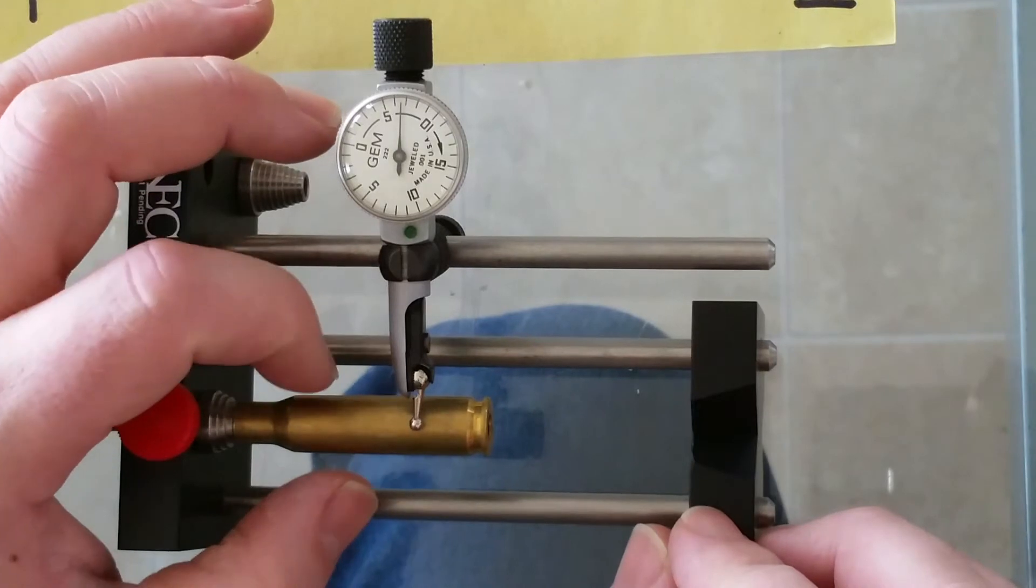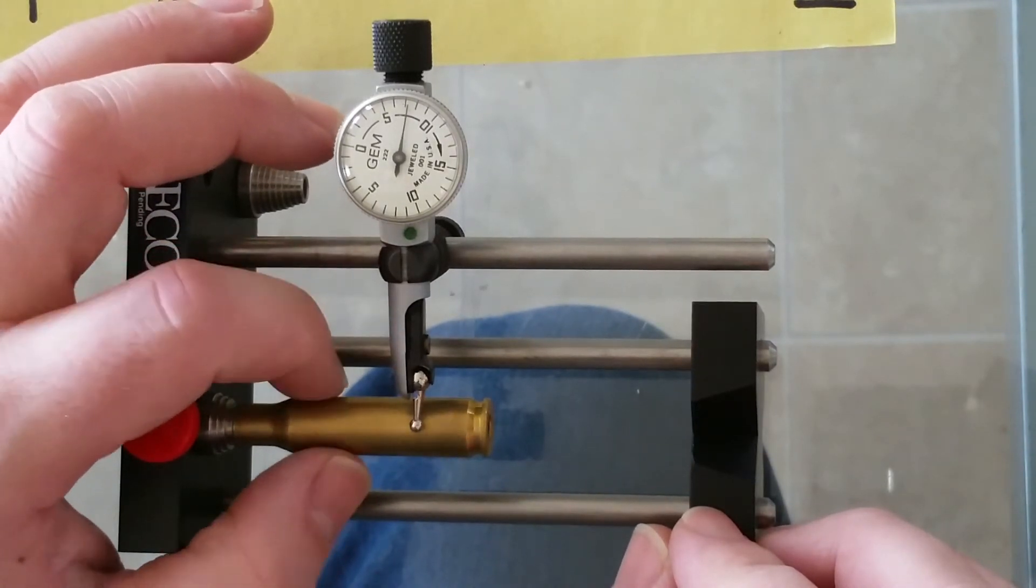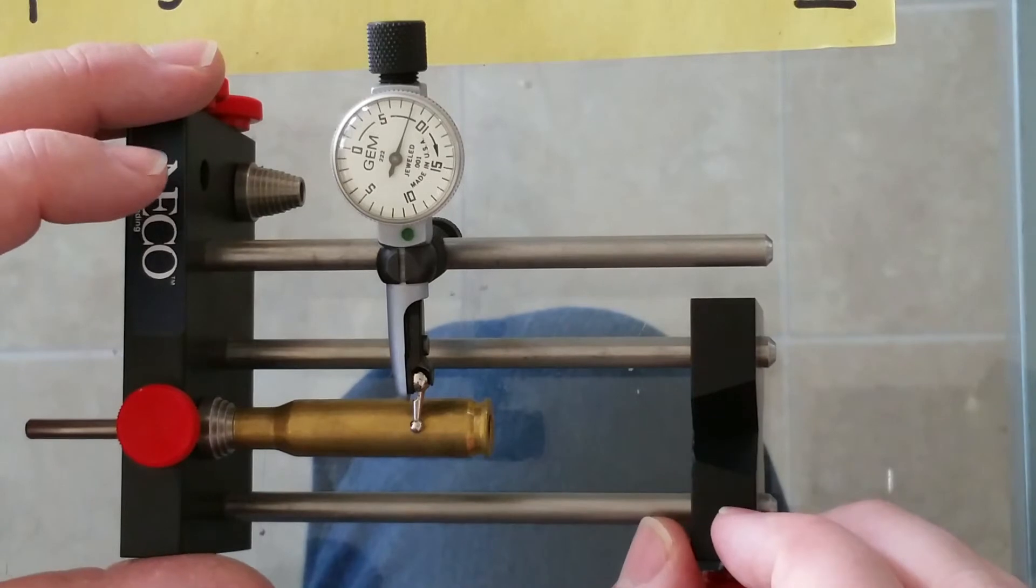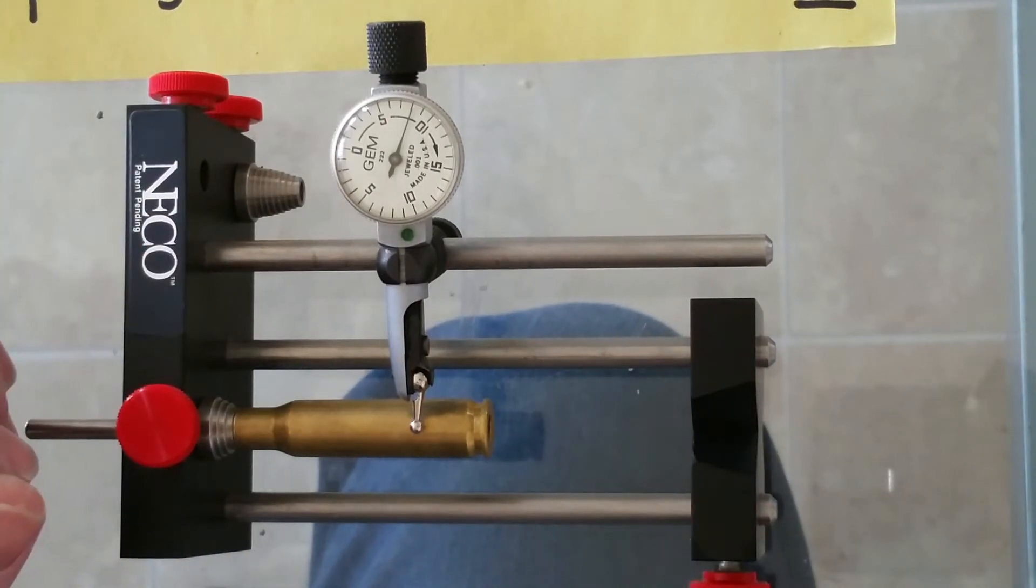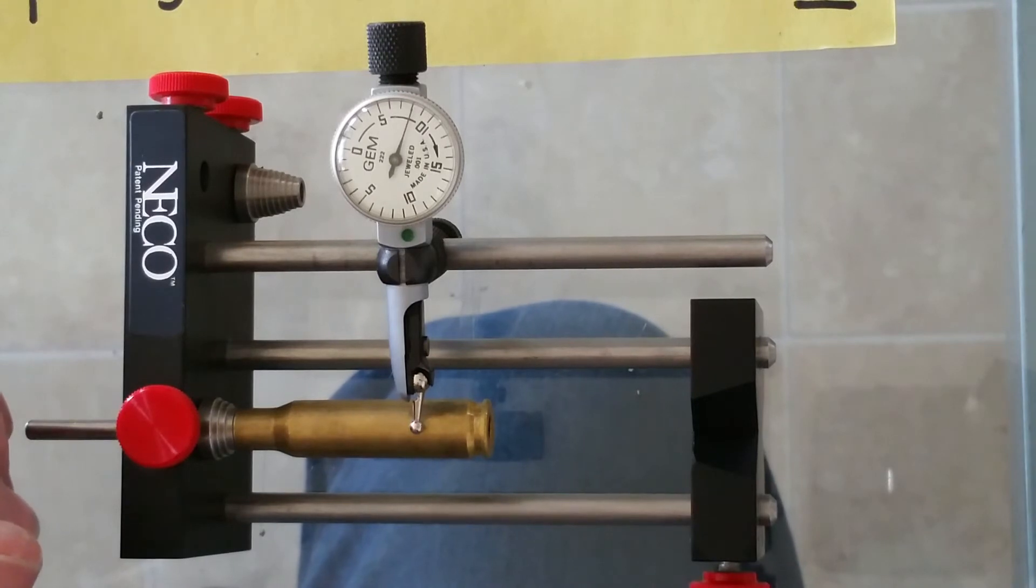So this has about 2,000 runout, which is pretty good. The Lake City I found up to 9,000 runout. The TA seems to be pretty consistently 1 to 2,000.